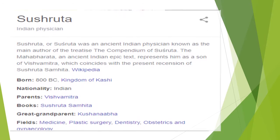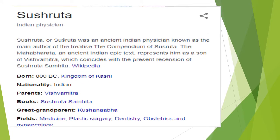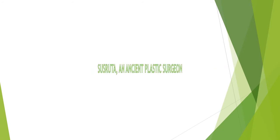Students, let's see some information about Sushruta. Sushruta was an ancient Indian physician known as the main author of the treatise, the Compendium of Sushruta. The Mahabharata, an ancient Indian epic text, represents him as a son of Vishwamitra, which coincides with the present recension of Sushruta Samhita. Here is some information about when he was born, what is his nationality, who are his parents, and in which fields he worked.